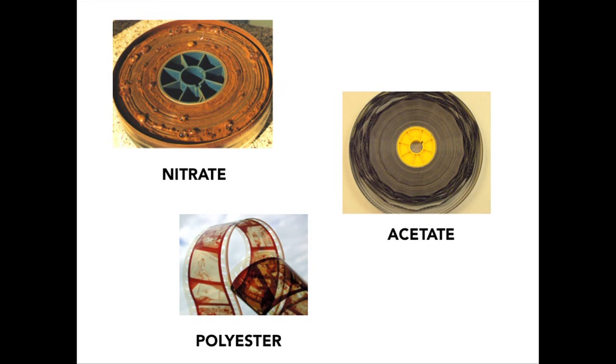8mm and super 8 are much more likely to have come from home movie cameras — something filmed by someone for their own personal use, so it's frequently unique. We're not as likely to have it in a public media archive. The basic types of film base you're likely to see are nitrate, acetate, and polyester.